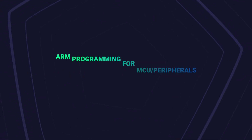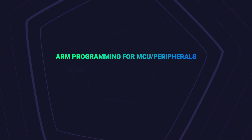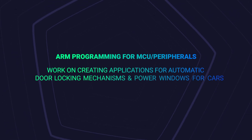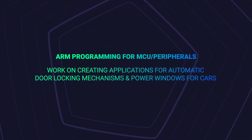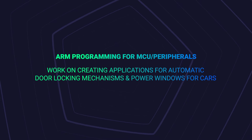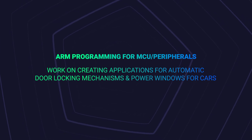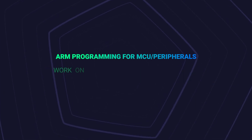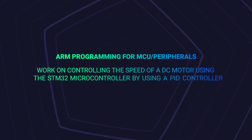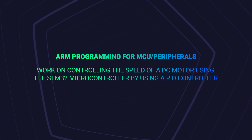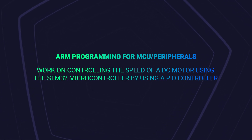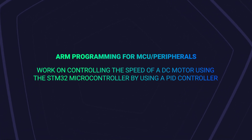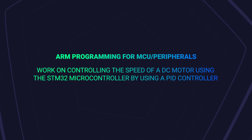In ARM programming for MCU features, you will work on creating applications for automatic door locking mechanisms and power windows for cars. You will also work on controlling the speed of a DC motor using the STM32 microcontroller by using a PWM controller that continuously provides a modulated signal.